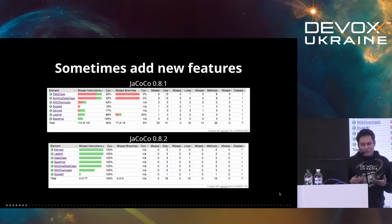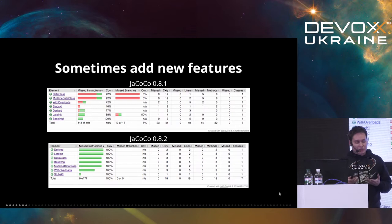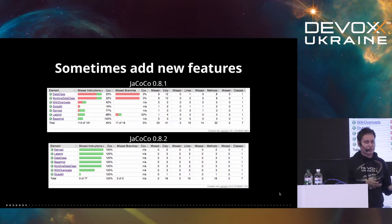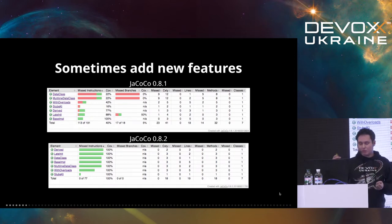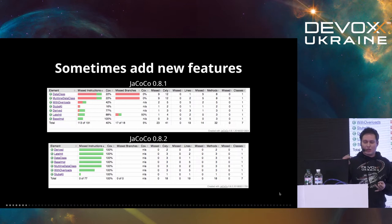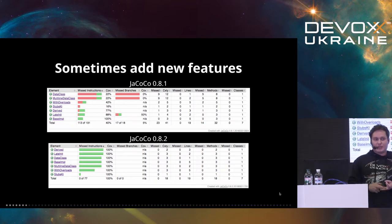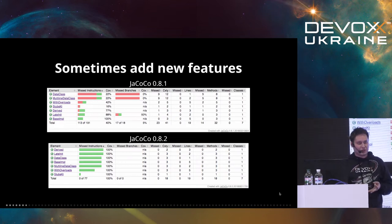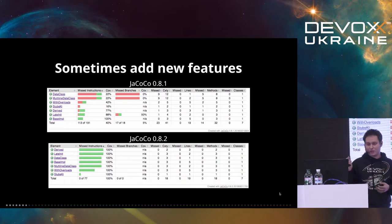The same things apply not only to JaCoCo — they apply to any tool that in some way analyzes bytecode, not source code. For example: SpotBugs (formerly FindBugs), SonarQube itself, PIT mutation testing. All those tools work with bytecode, and there are quite some difficulties, so we're going to have a look at those difficulties.